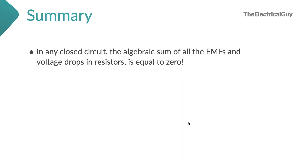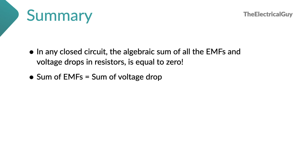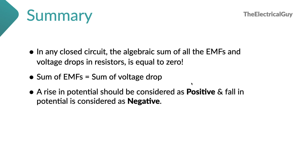To summarize: in any closed circuit, the algebraic sum of all the EMFs and voltage drops in the resistor is equal to zero. Key words are 'closed circuit' and 'algebraic sum'. Equivalently, the sum of EMFs in the closed circuit equals the sum of voltage drops. A rise in potential is positive and a fall in potential is negative — always remember the staircase example while assigning signs.